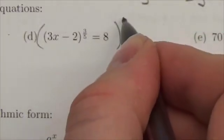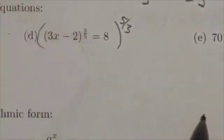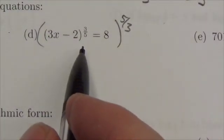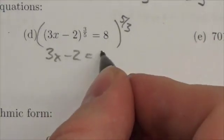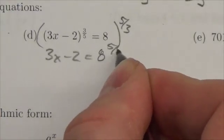To do this I'm going to take everything to the reciprocal power. In this case we shouldn't run into too much difficulty here. This should just become 3x minus 2 is equal to 8 to the 5 thirds.